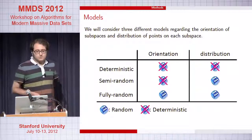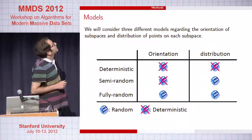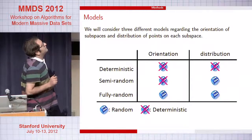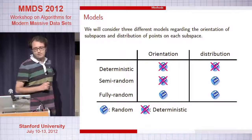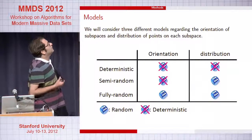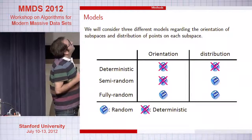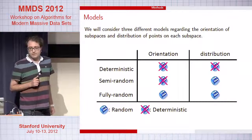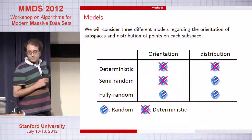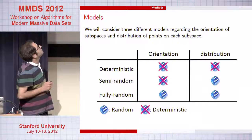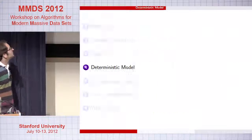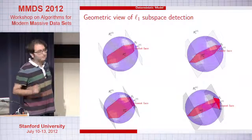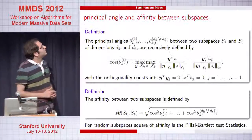To analyze our results, we look at three different models. The first is a deterministic model. Then we have a semi-random model where the distribution of the points is random but the orientation is fixed. Finally, we have the fully random model. There isn't time to describe the deterministic model in detail, but I want to say there is good geometric understanding and theory behind it. Moving on to the semi-random model.